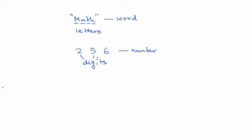So 2, 5, and 6 are the digits in the number 256, just as M, A, T, and H are the letters in the word math.